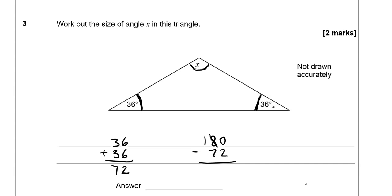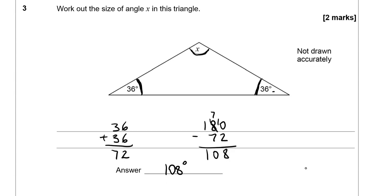We borrow 1 from the 8. This becomes a 10. 10 take away 2 gives us 8. 7 take away 7 is 0. 1 take away 0 is 1. So 108 degrees. That's what angle x is equal to.